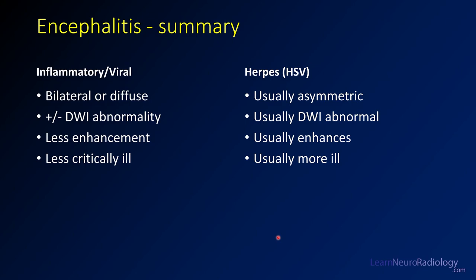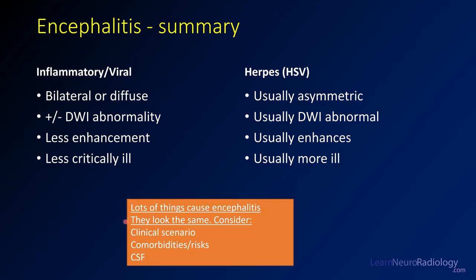Here's your summary of encephalitis. Inflammatory or viral encephalitis tends to be more bilateral and diffuse, with less diffusion abnormality, less enhancement, and the patients are less critically ill. In contrast, herpes tends to be asymmetric, diffusion is abnormal, there can be a lot of enhancement, and those patients tend to be very ill. Of all these inflammatory and viral conditions, it can be extremely challenging to tell the difference — so don't necessarily expect imaging alone to give you a diagnosis. Just suggest encephalitis and let the clinical picture and testing lead to the actual cause. Consider the clinical scenario, comorbidities, and the CSF.